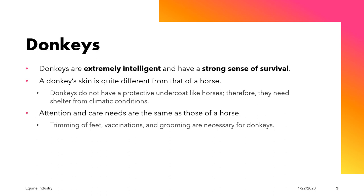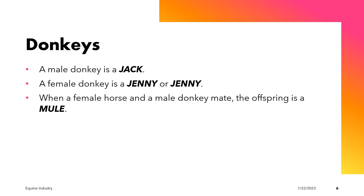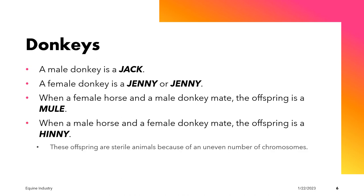In terms of attention and care needs, donkeys have the same needs as horses — they need trimming of the feet, vaccination, and grooming. The terminologies associated with donkeys: a jack is a male donkey, and a jenny or janet is a female donkey. When a female horse (mare) is mated with a male donkey, the result is a mule. When a stallion (male horse) is mated with a female donkey, the offspring is a hinny. Both the mule and hinny are considered to be sterile animals because of the uneven number of chromosomes.